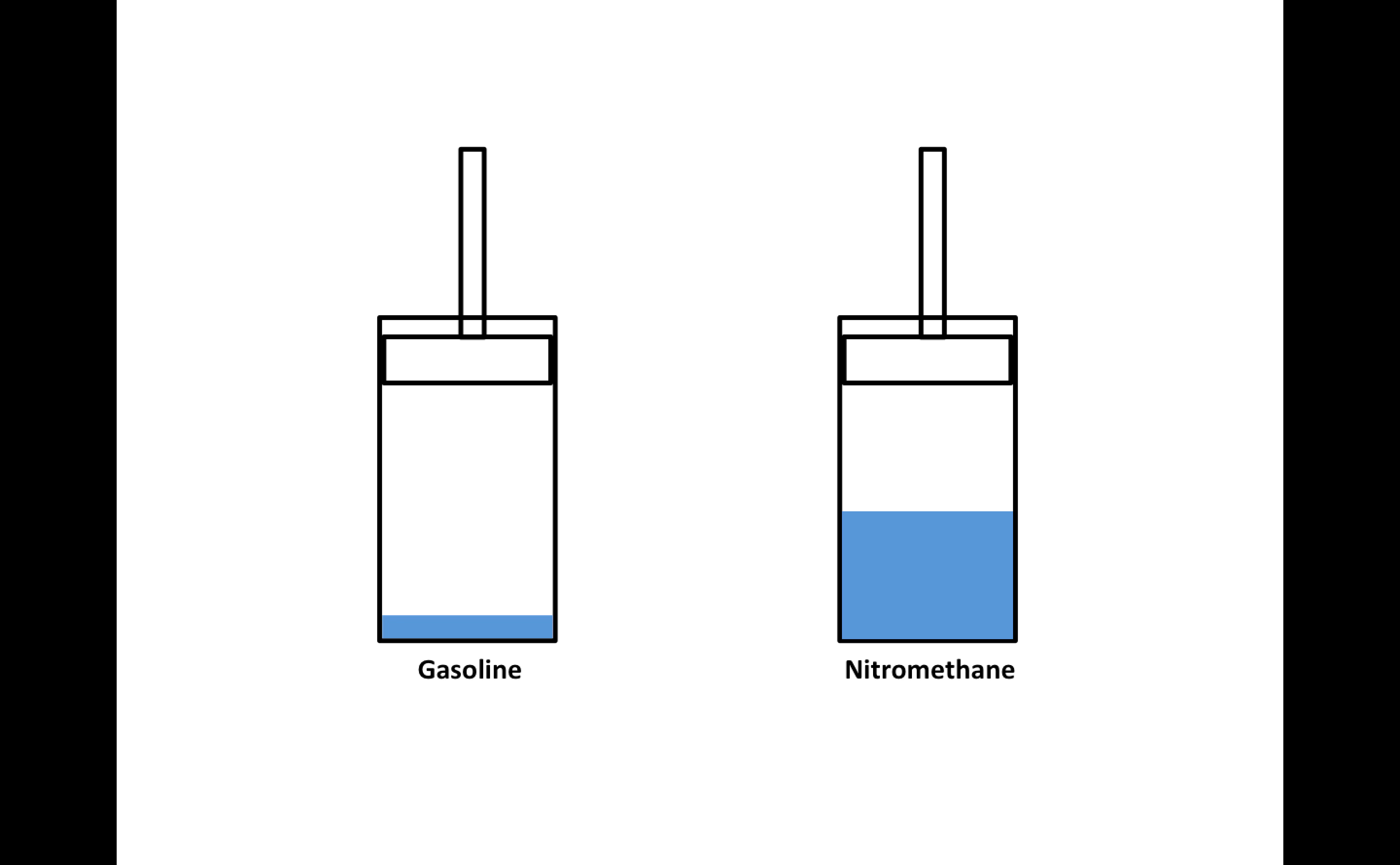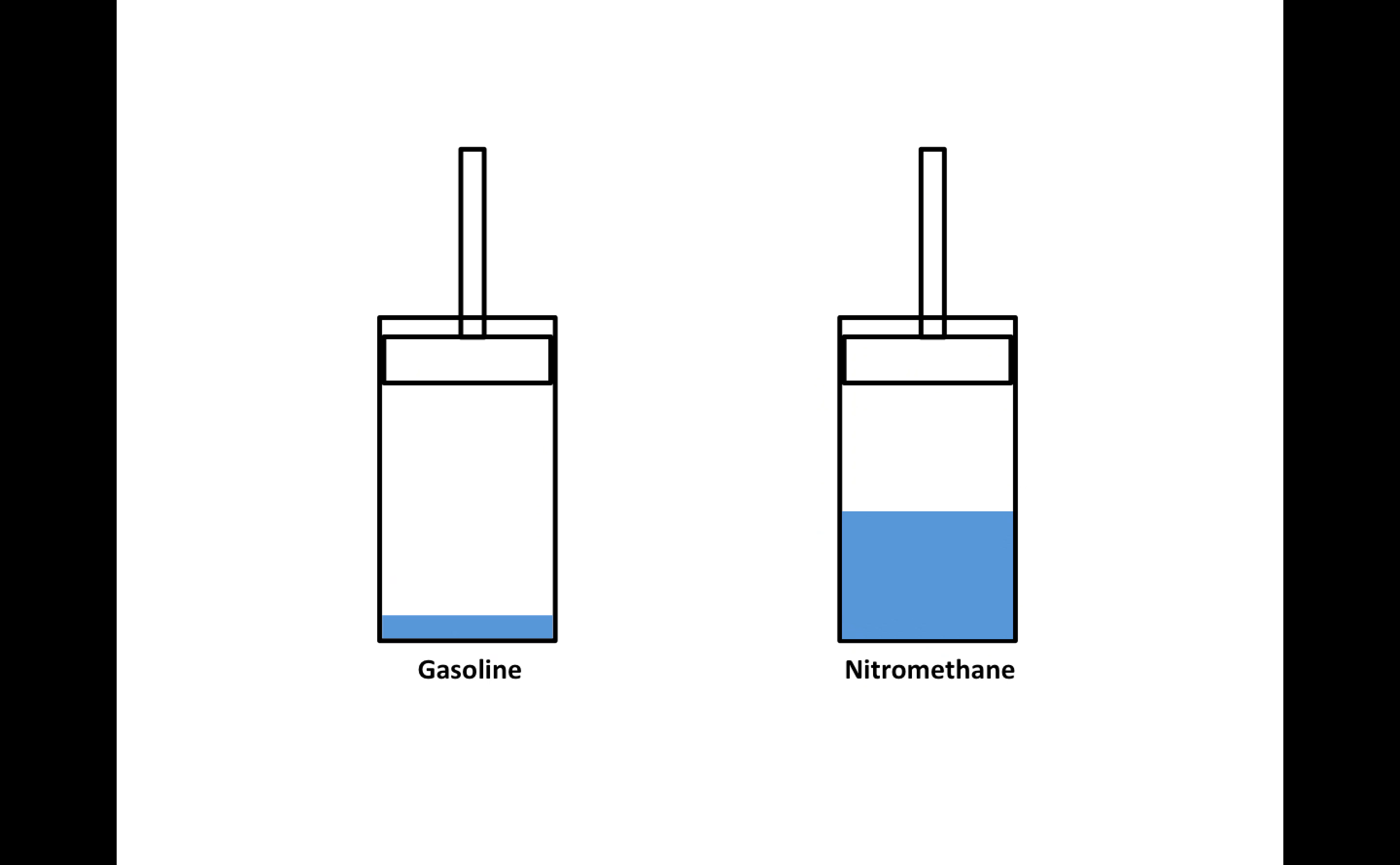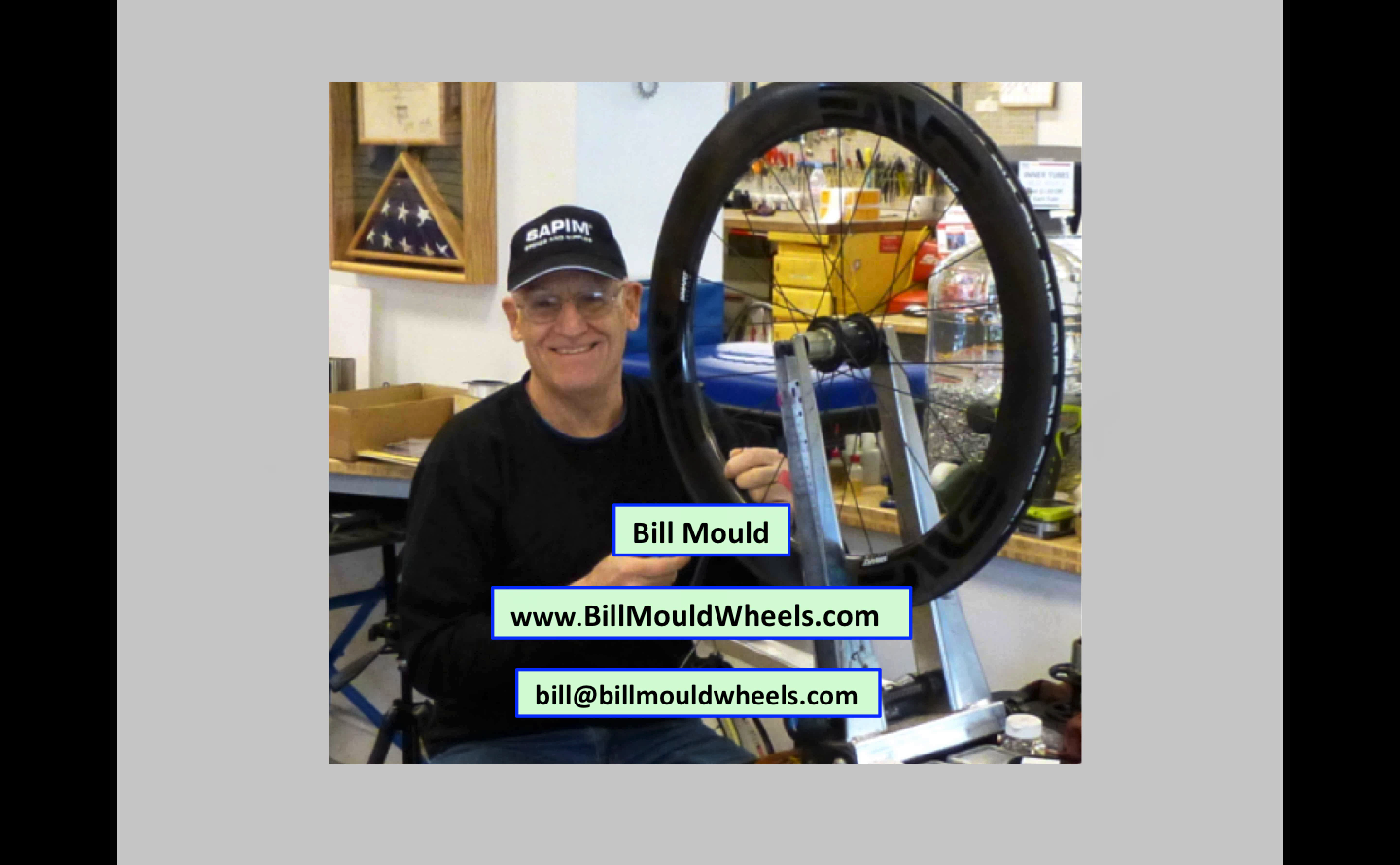So with nitromethane I can use a very large amount of fuel in the cylinder because I don't need much oxygen from the outside, whereas with gasoline, a small amount of fuel and a lot of oxygen from the outside. And that is what gives these funny cars and top fuel dragsters their enormous power.